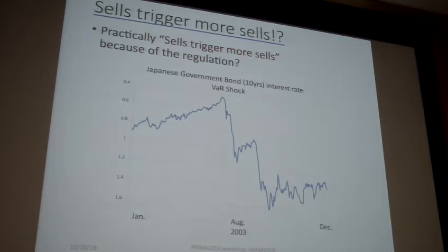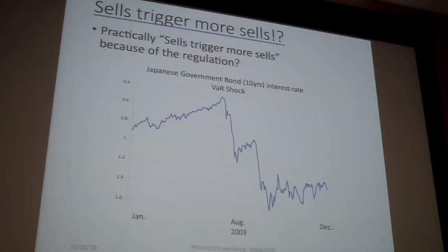One problem is: sells trigger more sells. Practically, sells trigger more sells because of this regulation. This is a graph of the GDP interest rate and Japanese government bond 10-year returns. In 2003, a real crash shock happened, and after that, two bigger crash shocks happened.